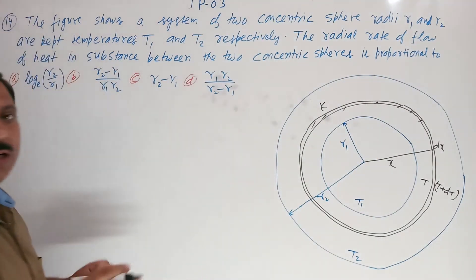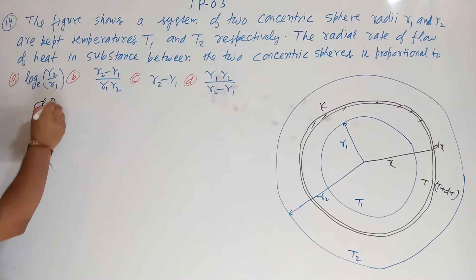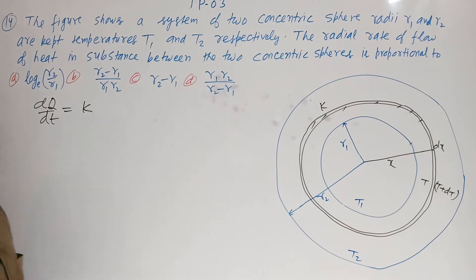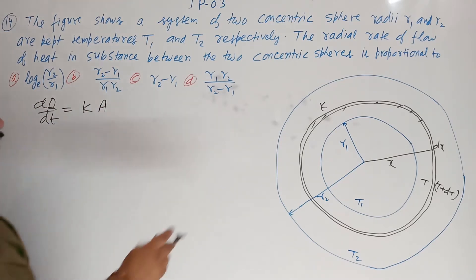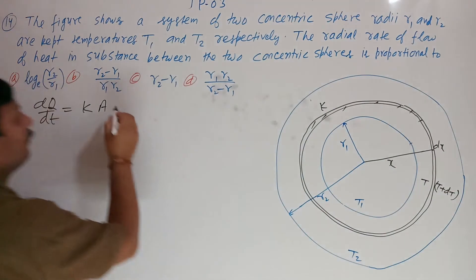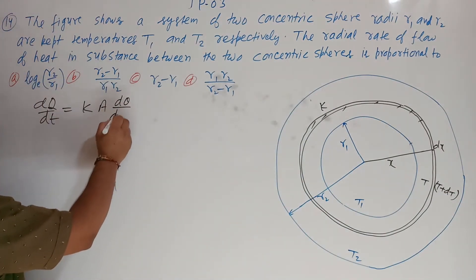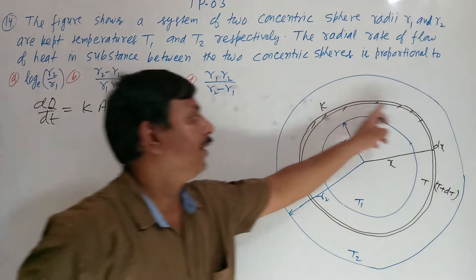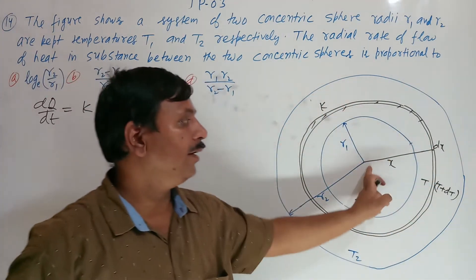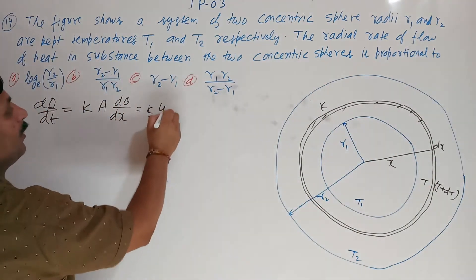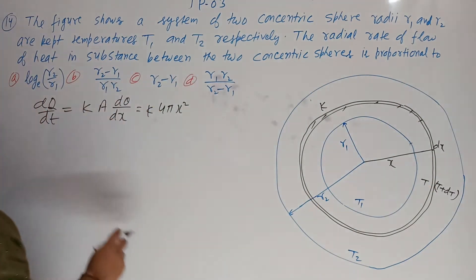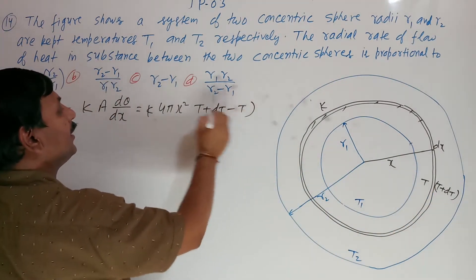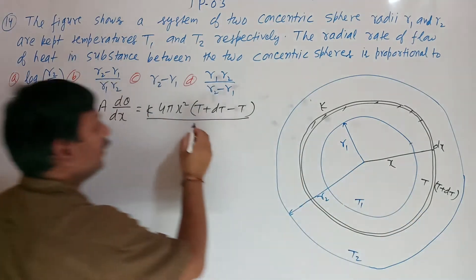The rate of flow of heat, DQ upon DT, is equal to K times area times the temperature difference D-theta upon DX. Here the area of the sphere of radius X is 4πX². So DQ/DT equals K times 4πX² times (T + DT − T) divided by width DX.